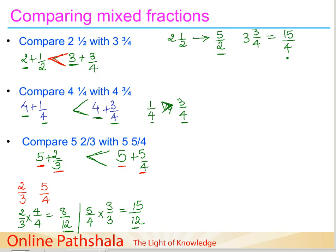We now have five by two and fifteen by four as improper fractions. They are also unlike fractions, so we find the LCM of two and four, which is four. Multiplying five by two — numerator and denominator by two — gives ten by four. Fifteen by four stays as fifteen by four. Now these are like fractions and we compare numerators.